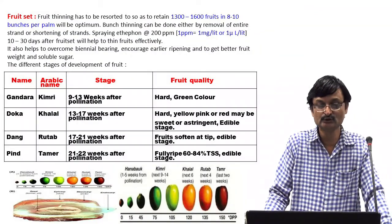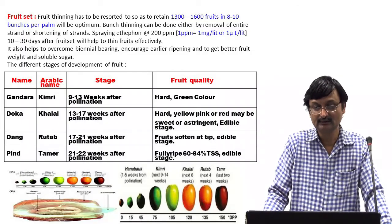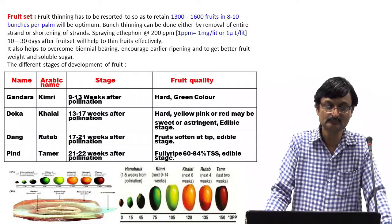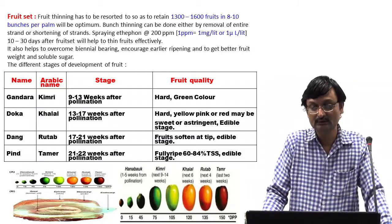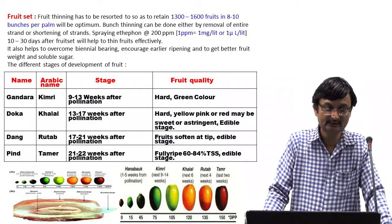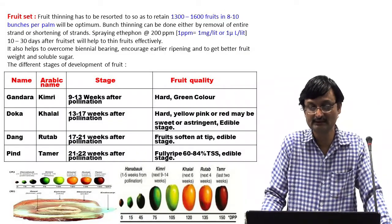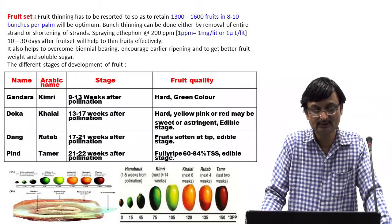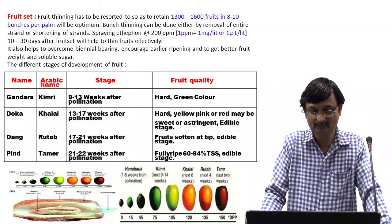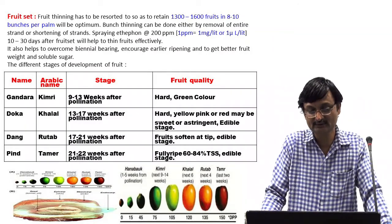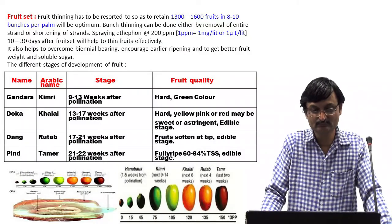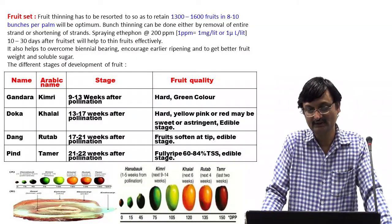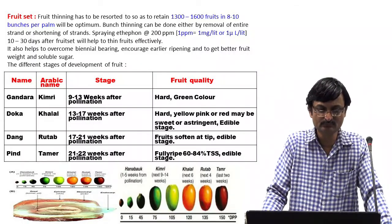Fruit set and thinning: Fruit thinning has to be done to retain 1300 to 1600 fruits in 8 to 10 bunches per palm for optimum production. Bunch thinning can be done either by removal of entire strands or by shortening, or by spraying an ethylene-releasing chemical at 200 ppm — where 1 ppm equals 1 mg/L for solids or 1 µL/L for liquids. Applying this 10 to 30 days after fruit set helps thin fruits effectively, overcomes biennial bearing, encourages earlier ripening and improves fruit weight and soluble sugar content.